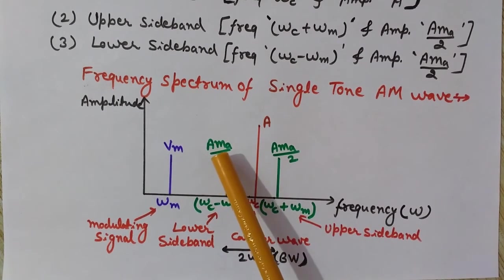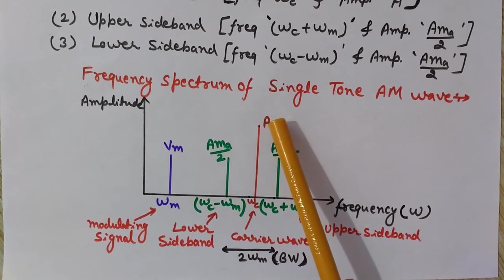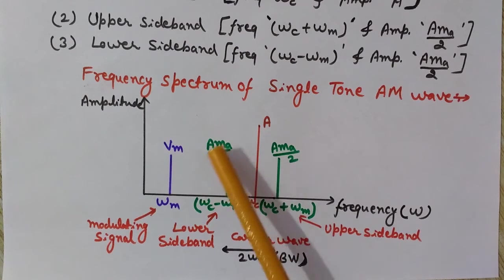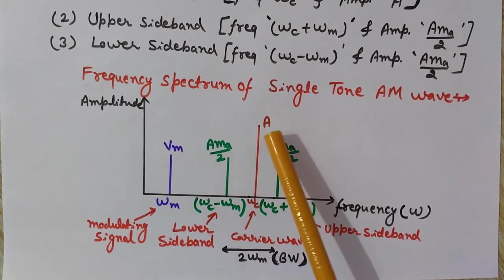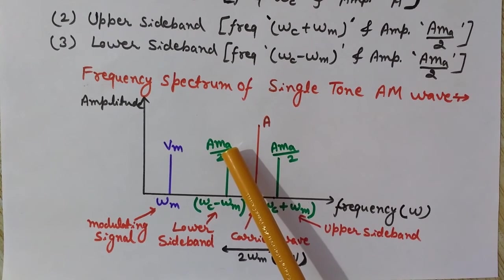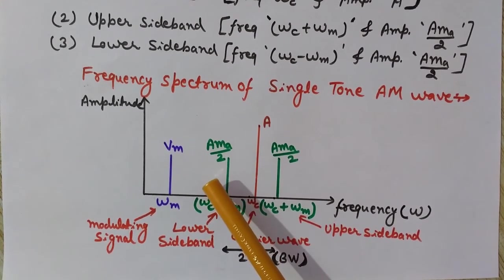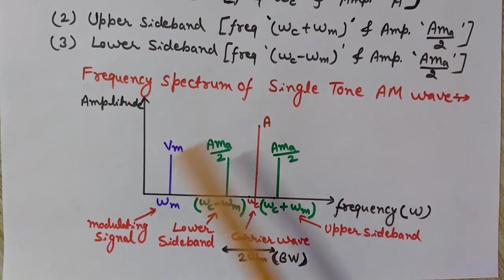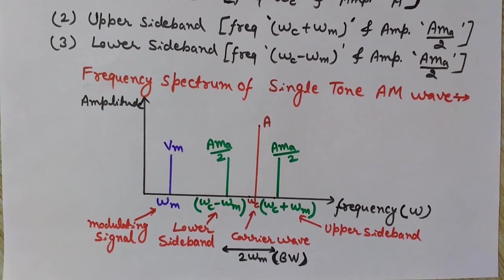The amplitudes of the two sidebands are equal but lower than the carrier amplitude, because ma is less than or equal to 1, so A·ma/2 is less than A. The reason ma must be less than or equal to 1 is that if it exceeds 1, we get a distorted modulating signal at the receiving end. This is the frequency spectrum of the single-tone AM wave.